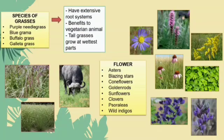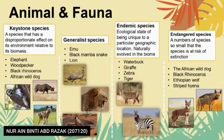The species of grass that can be found here are purple leader grass, blue grama, buffalo grass and galeta grass. These grasses have extensive root systems and benefit herbivorous animals such as buffalo. Most of the tall grasses grow in the wetter parts. For flower species, they include aster, blazing star, cornflower, golden rods, sunflowers, clovers, sorrelias and wild indigo.